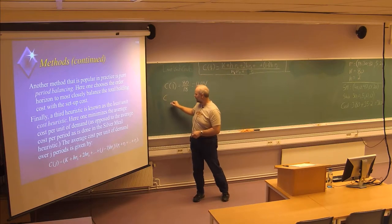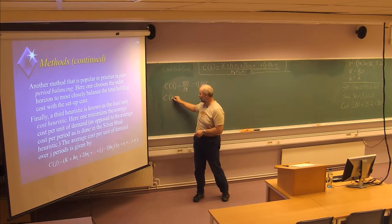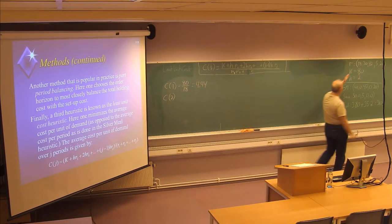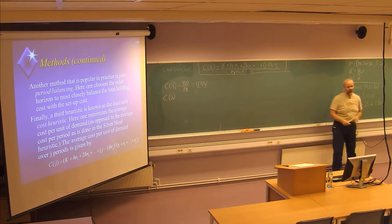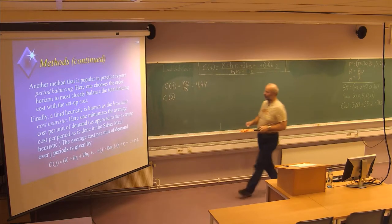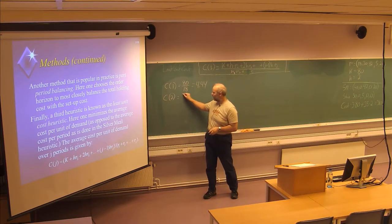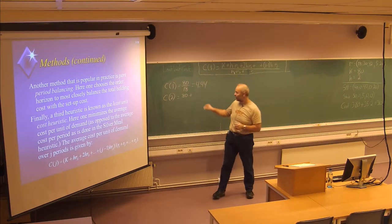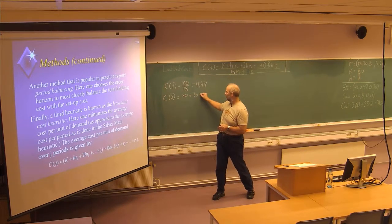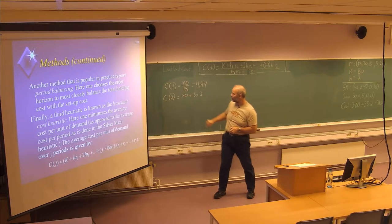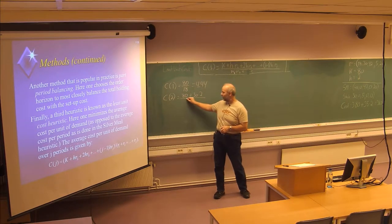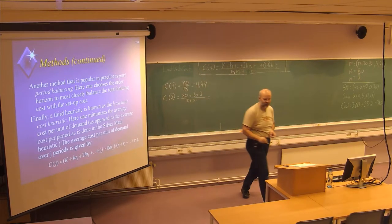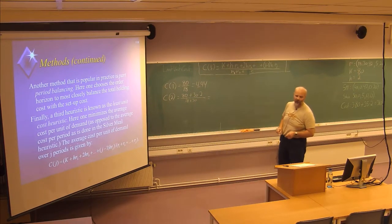Then the next cost will be C(2), which is the situation where we are producing for two periods: 18 plus 30. We will have a setup cost of 80. We have to store 30 items in one period at a cost of 2. And we are dividing by 18 plus 30, and we get the result of 2.92.